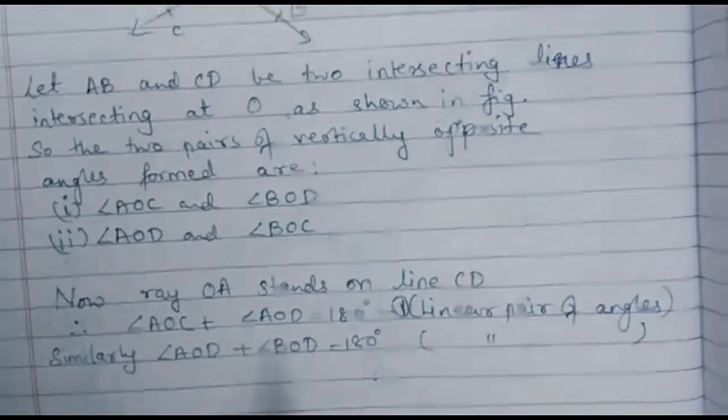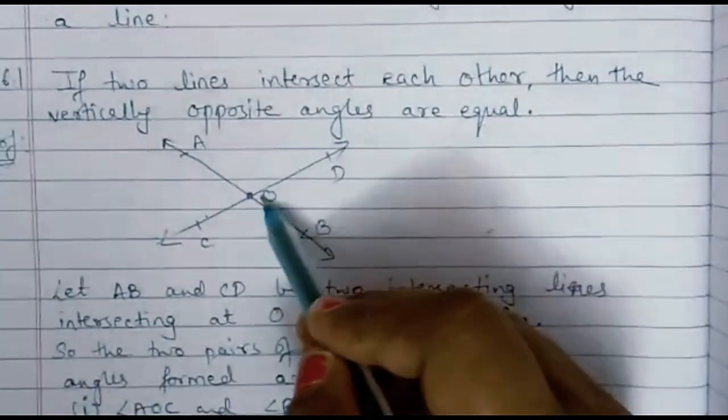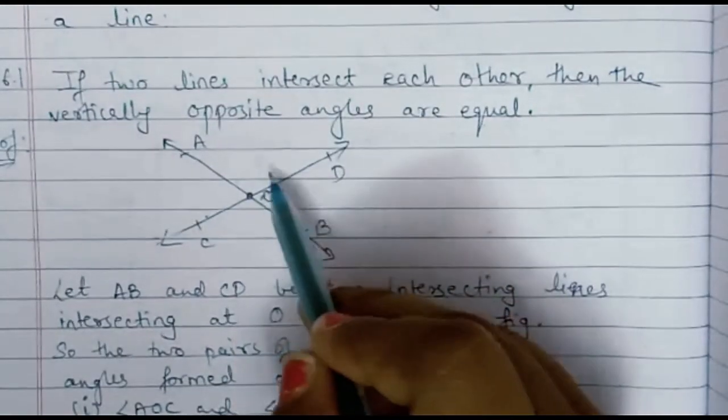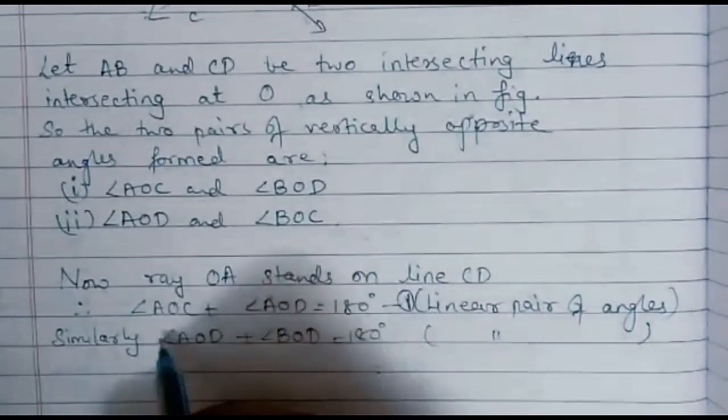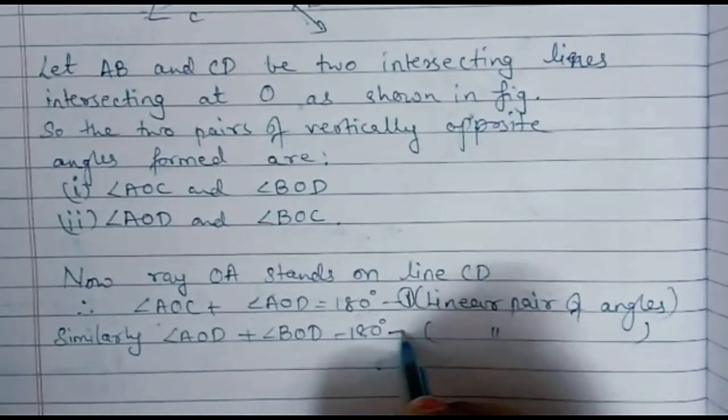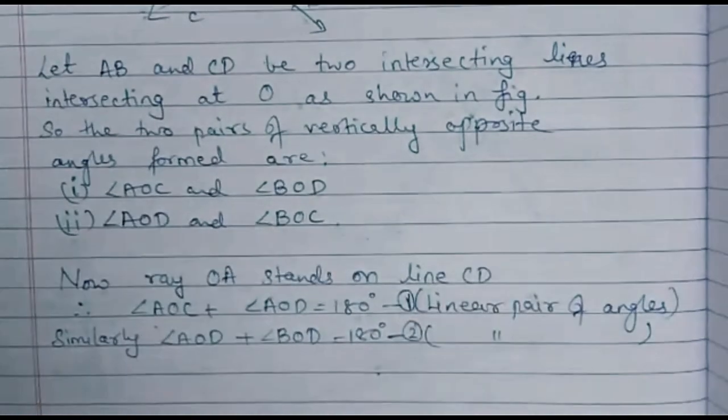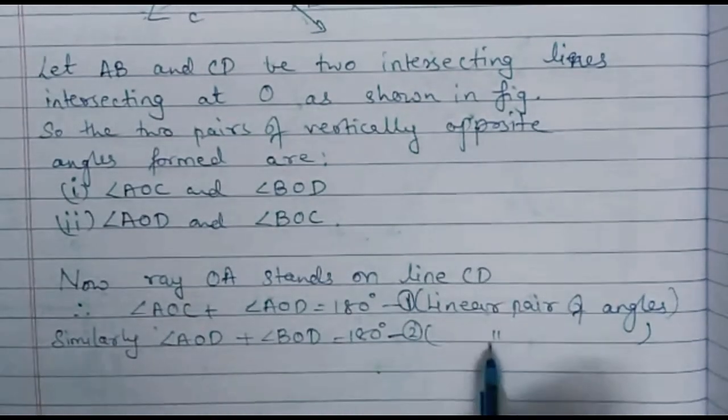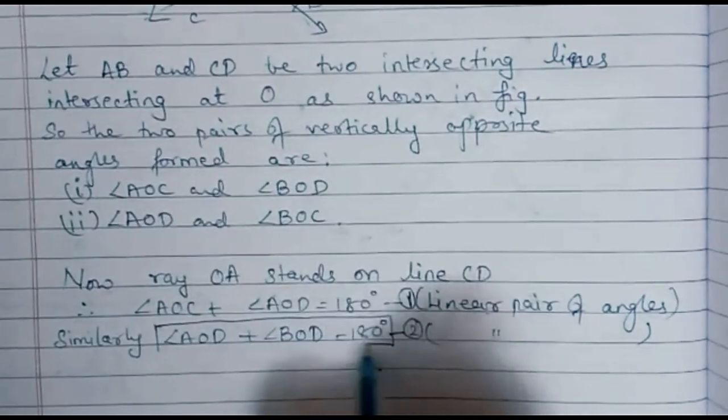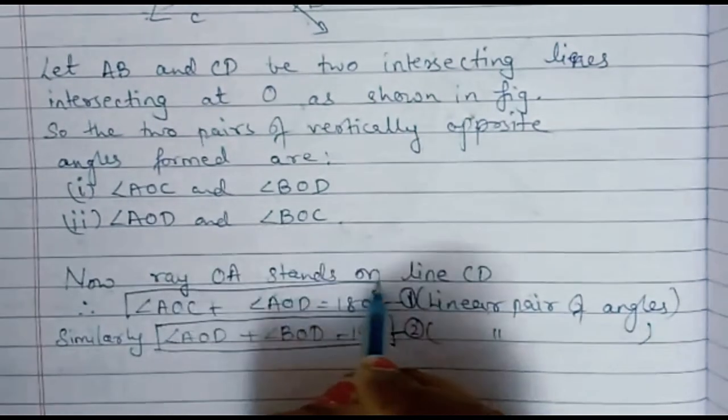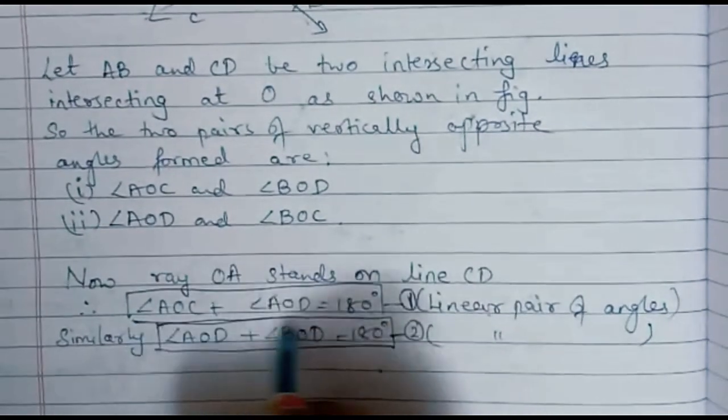Okay, same way here you can see OD stands on AB. So angle AOD and angle BOD also forms a linear pair. So we got the second result: angle AOD plus angle BOD is equal to 180 degrees. And in both the cases you will write the reason they are forming linear pair of angles. So this is result number 2 and this one is result number 1.